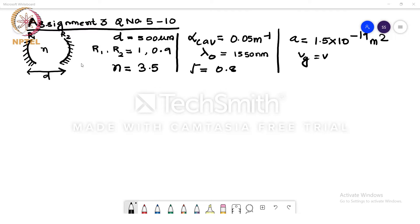We know the central wavelength, let us represent it as lambda 0, the optical confinement factor is known and the gain coefficient is known, and we are also having the information that the group velocity here is equal to the phase velocity.